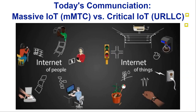With advancement in technology, we are moving from the Internet of People — where people communicate over the internet — to the Internet of Things, where objects communicate over the internet. IoT can be classified into massive IoT or critical IoT. Massive IoT involves thousands or millions of devices like sensors and meters communicating with the network. The number of objects is far greater than the number of people, so the internet must consider this fact.